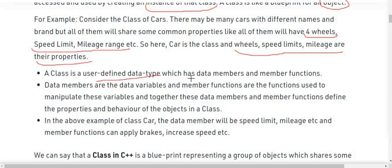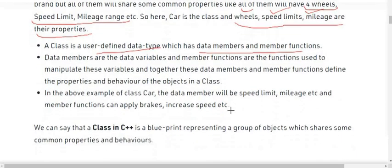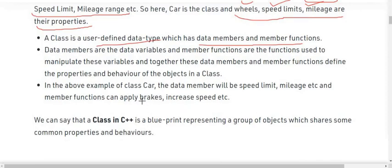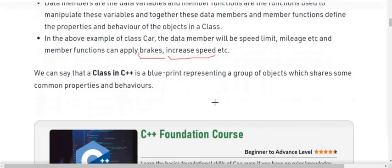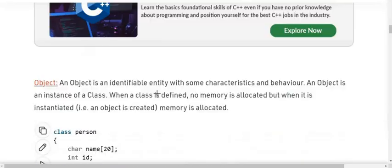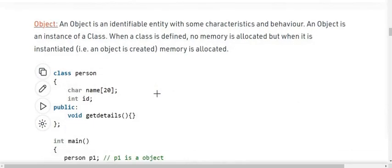So Car is a class, and wheels, speed limit, and mileage are its properties. Car is a user-defined type which has data members and member functions. In this case, the data members will be wheels, speed limit, and mileage, and the member functions will be the behavior of the car — for example, when we apply brakes or increase speed. We can say that a class in C++ is a blueprint representing a group of objects which share some common properties and behavior.